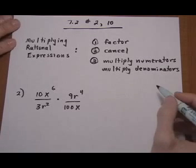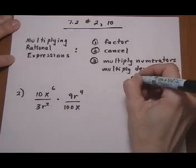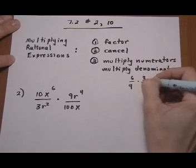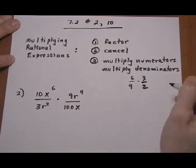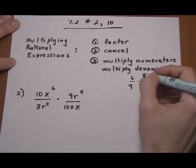This is just like doing fraction problems where we don't have any variables. If I had 6/9 times 3/2, first I would factor and then I would cancel.